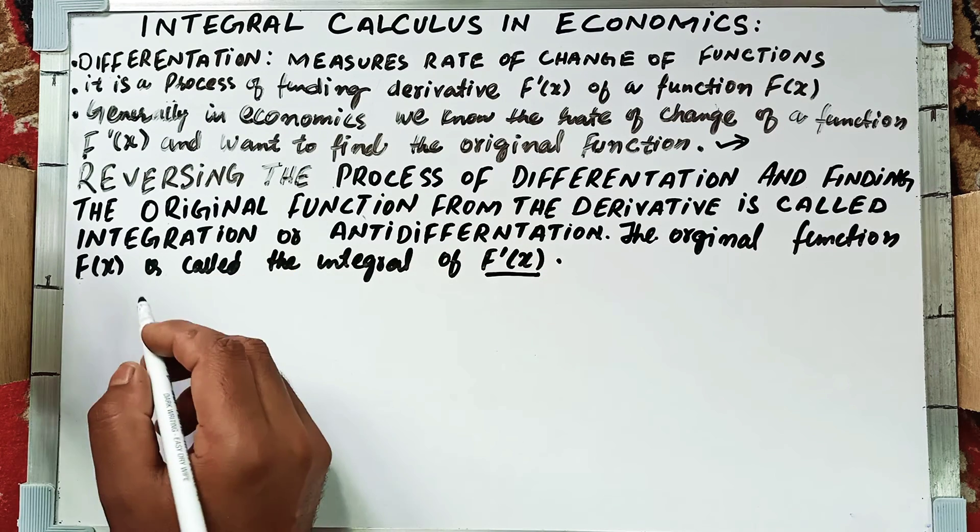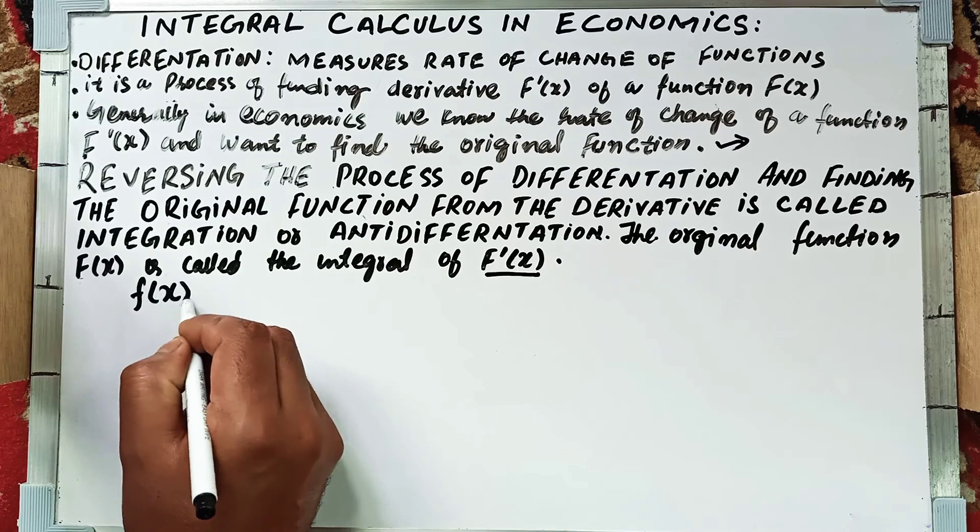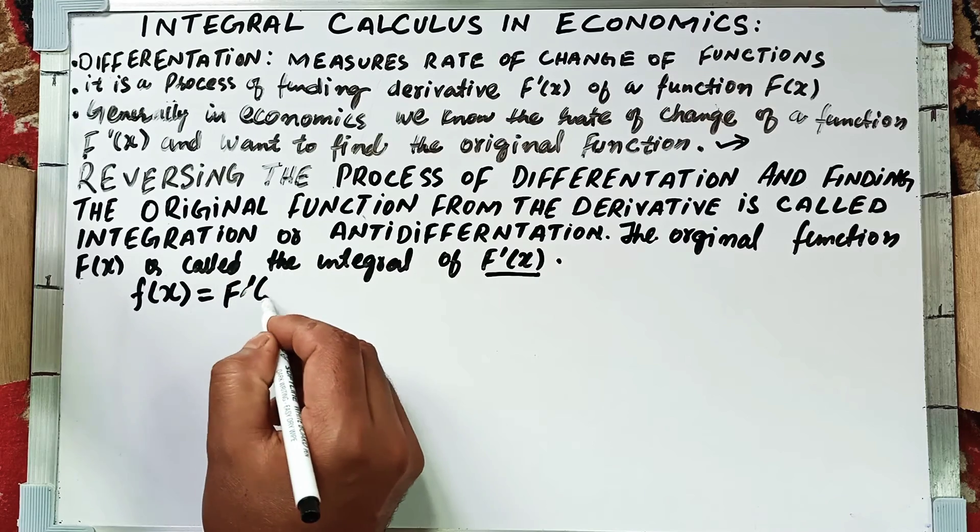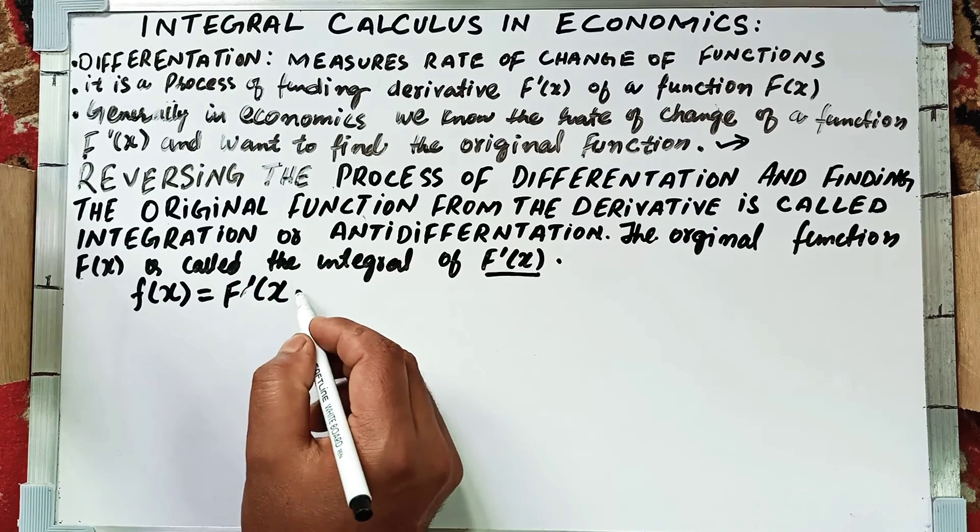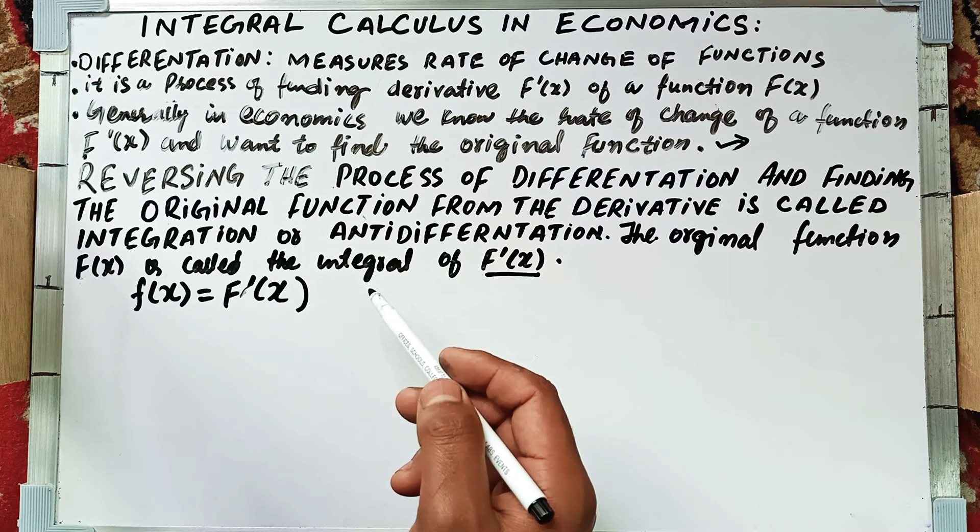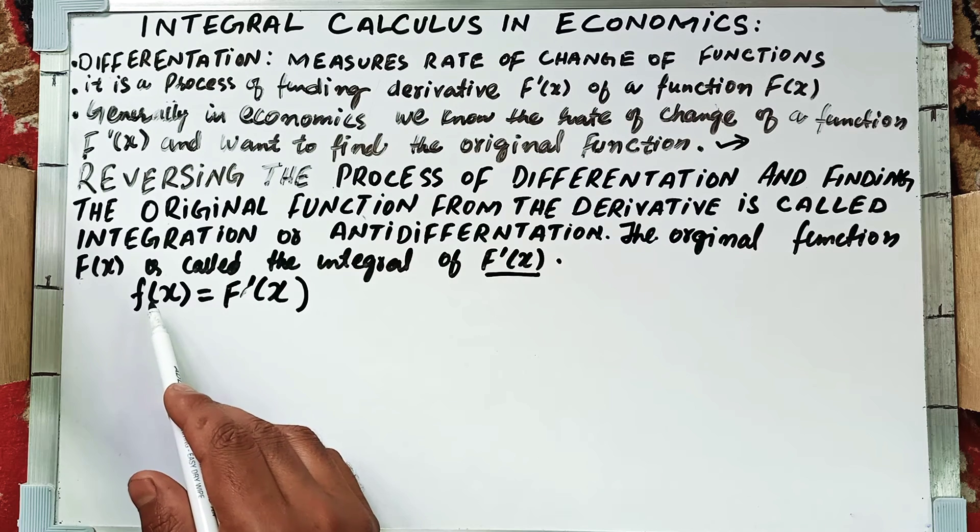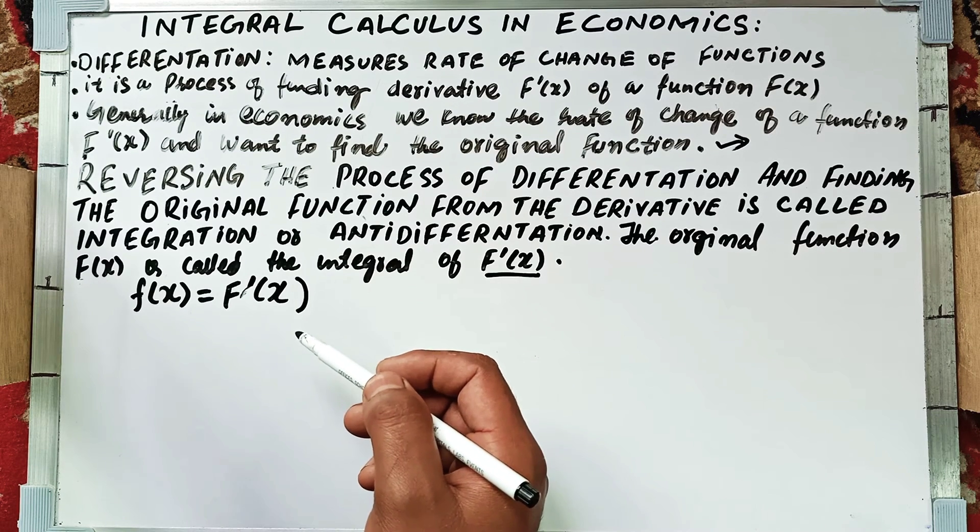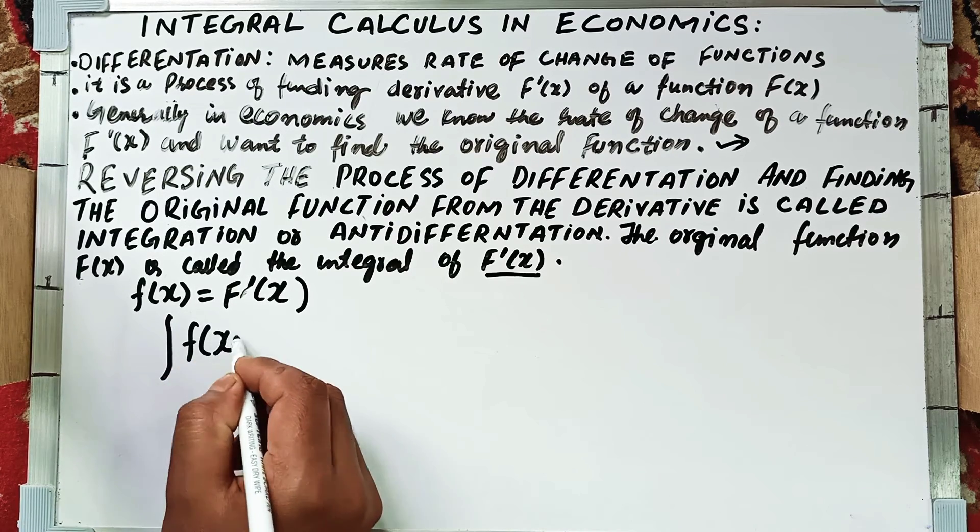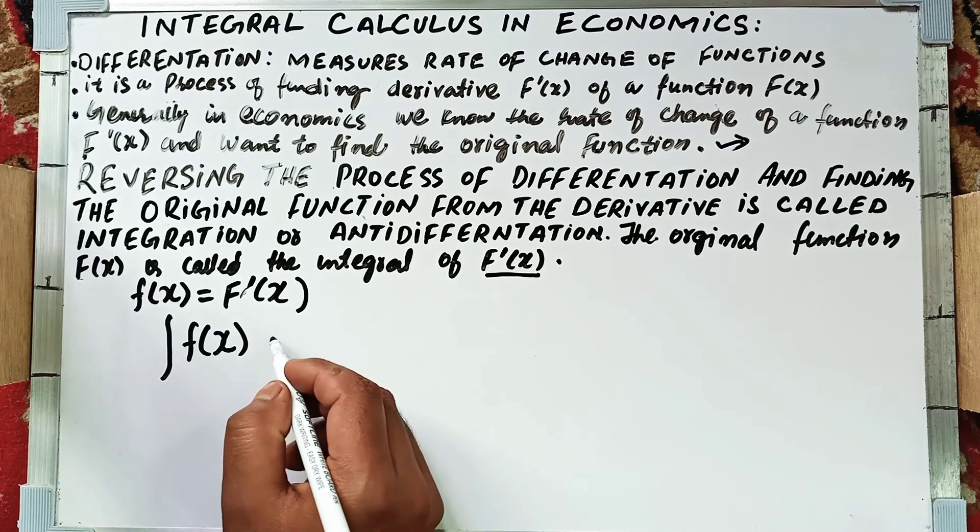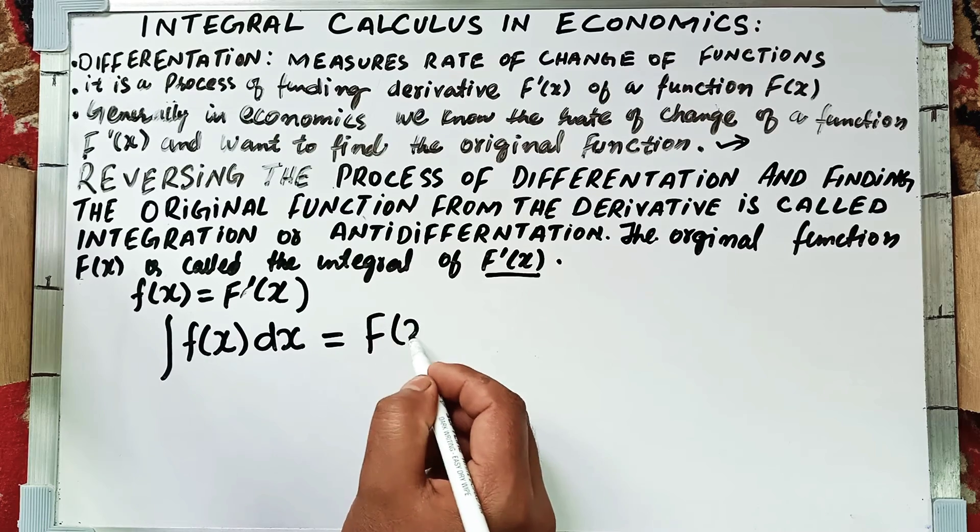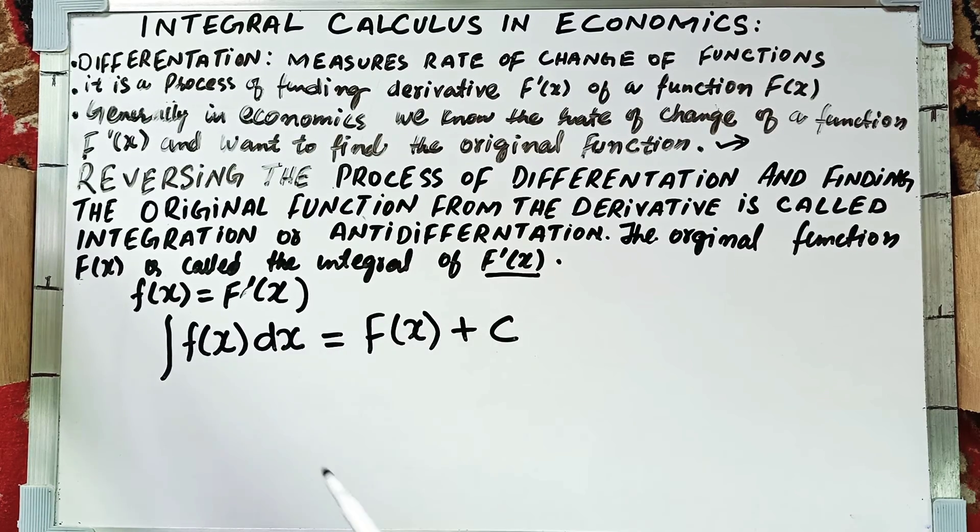Let us say we have a function f(x). For the sake of simplicity, we denote this as f(x). The anti-derivative or integral of f(x) is mathematically expressed as: integral of f(x) dx equals F(x) plus c.